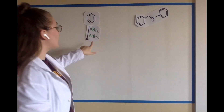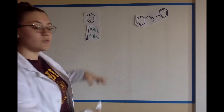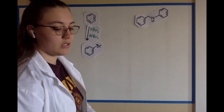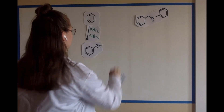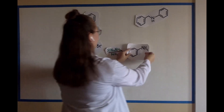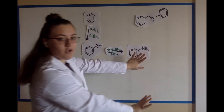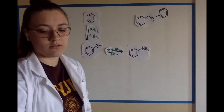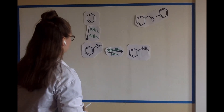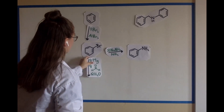One of bromine and aluminum bromide gives you bromobenzene. Add sodium amide and ammonia to give you aniline — save it for later. Now take bromobenzene and hit it with magnesium.